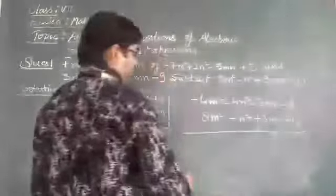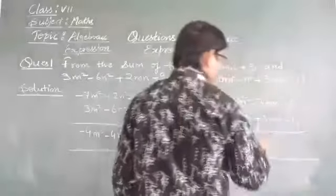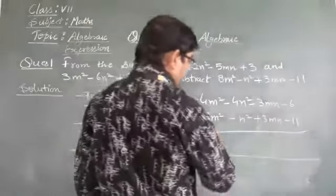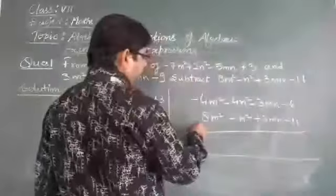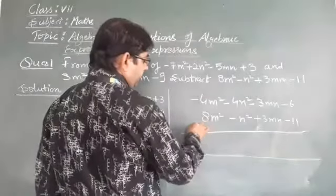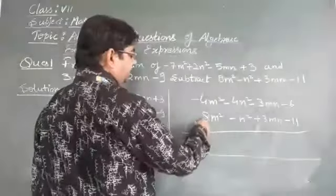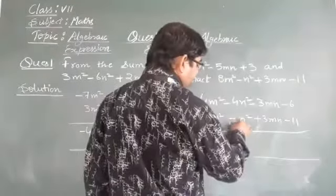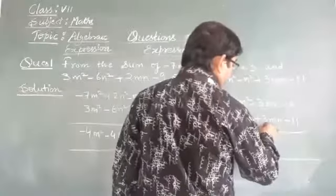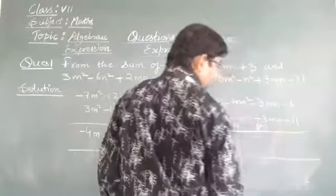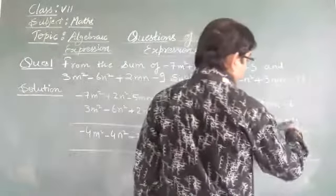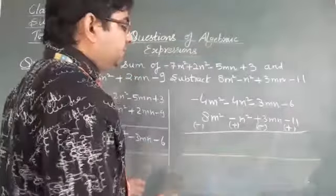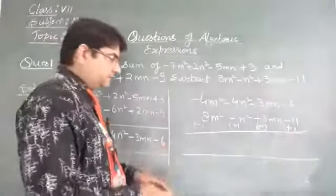Now we have to subtract this expression from this. We will change the sign. On changing the sign of the expression: here it is plus 8, so we will write minus — it is now minus 8. Minus n square, we will convert it to plus n square. Minus 3mn, we convert it to plus. We will convert the signs: plus into minus and minus to plus.